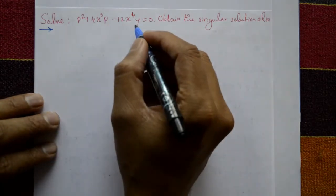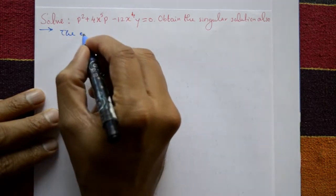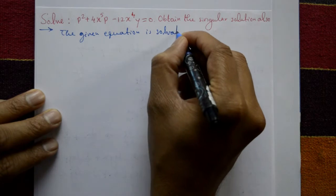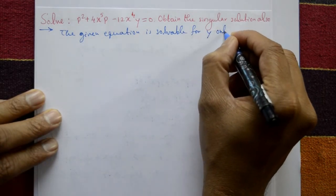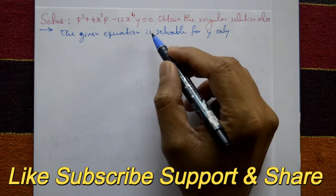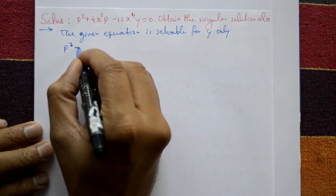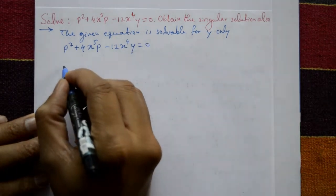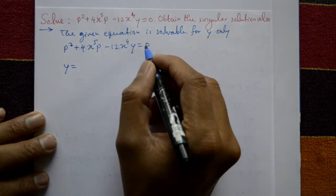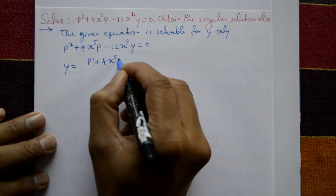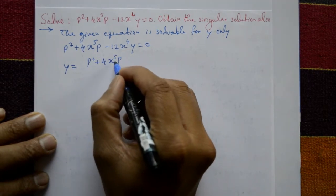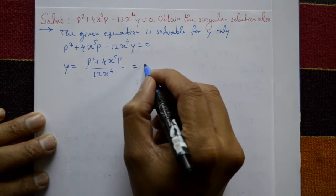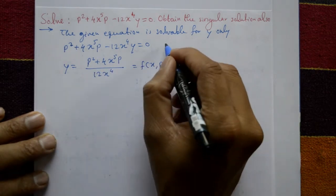Check whether the given expression is solvable for y, p, or x. The given equation is solvable for y only — it is not possible to express x or p explicitly. So the equation p squared plus 4x to the 5 times p minus 12x to the 4 times y equals 0 can be written as y equals p squared plus 4x to the 5 times p divided by 12x to the 4. This form is y equals f(x, p). Call this equation number 1.